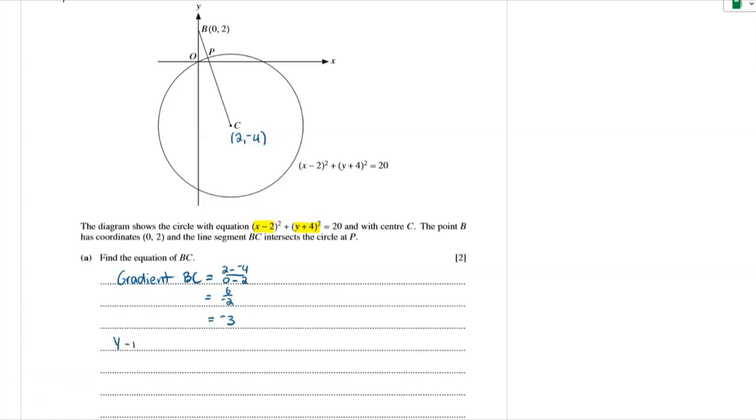And we already know the y-intercept because that is the point B, which is 2. And so the equation of the line, y equals mx plus c, which is negative 3x plus 2.